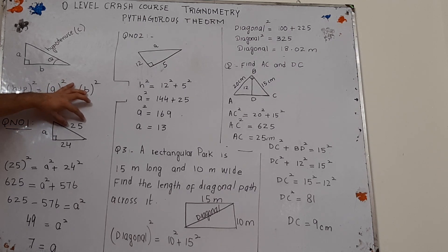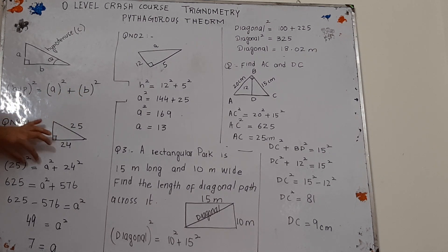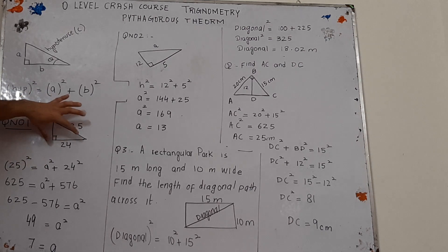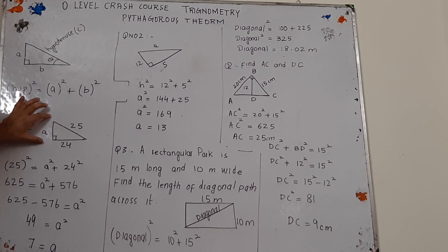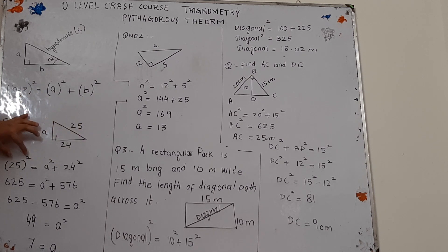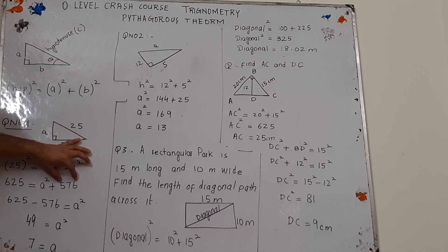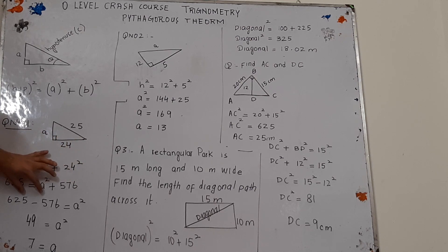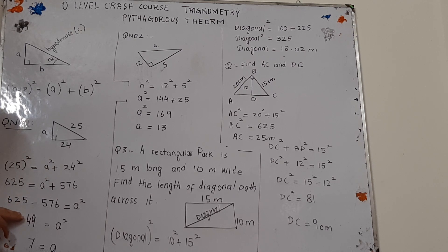Applying the Pythagorean theorem: hypotenuse squared means 25 squared equals the sum of the squares of the other two sides, that is a squared plus 24 squared. 25 squared is 625, and 24 squared is 576. 576 will come to the left side and be subtracted. The result of 625 minus 576 is 49.